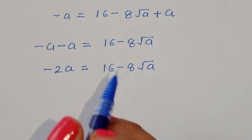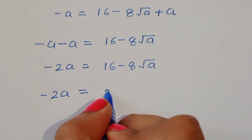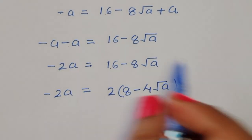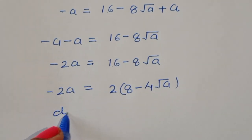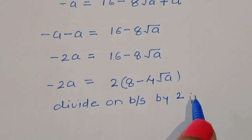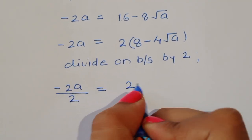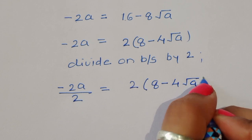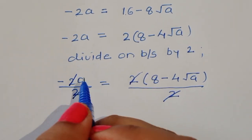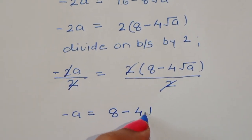We can take out factor 2 on the right side. So −2a = 2(8 − 4√a). Dividing both sides by 2: −a = 8 − 4√a.